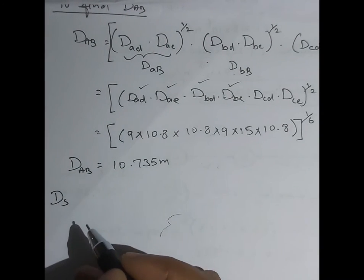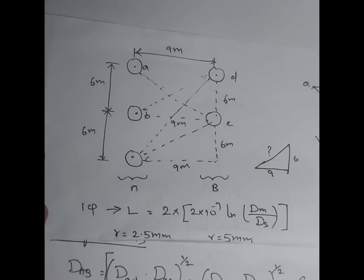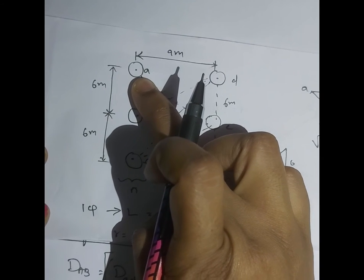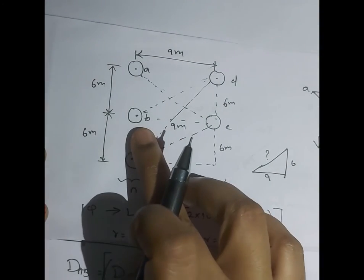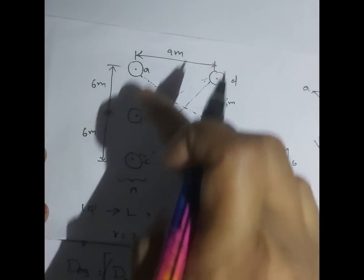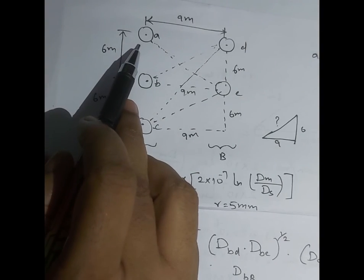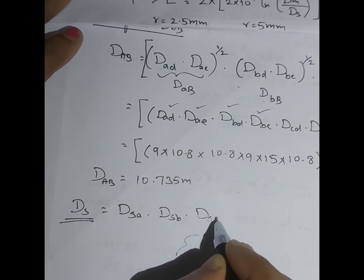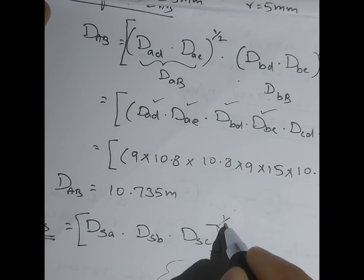For Ds of phase A, we have 3 conductors: A, B, C. Ds is the self geometric mean radius. We write Ds = (Dsa · Dsb · Dsc)^(1/3). For Dsa: it is (Daa · Dab · Dac)^(1/3). For Dsb: (Dbb · Dba · Dbc)^(1/3). For Dsc: (Dcc · Dca · Dcb)^(1/3). The entire expression is again raised to power 1/3.